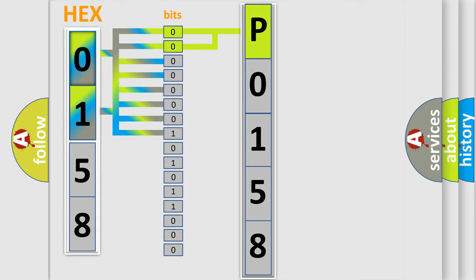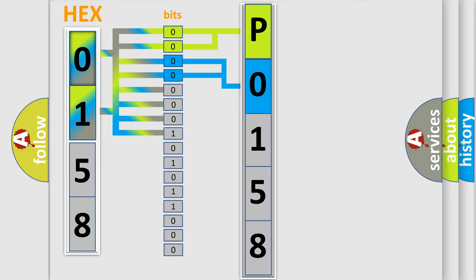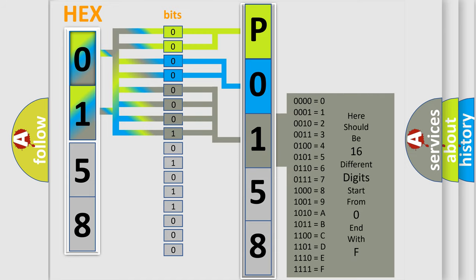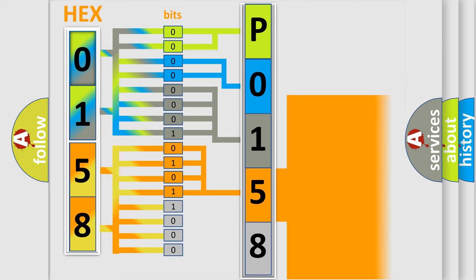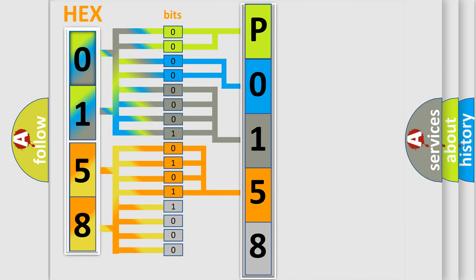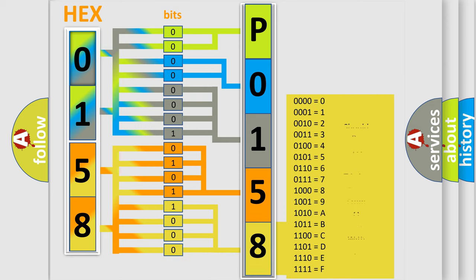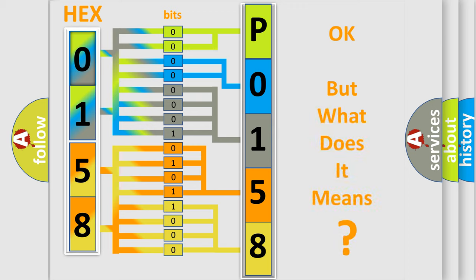The next two bits determine the second character. The last bits of the first byte define the third character of the code. The second byte is composed of a combination of eight bits: the first four bits determine the fourth character, and the last four bits define the fifth character. A single byte conceals 256 possible combinations. We now know how the diagnostic tool translates the received information into a more comprehensible format, though the number itself means nothing without knowing what it actually expresses.